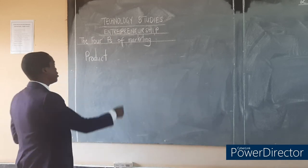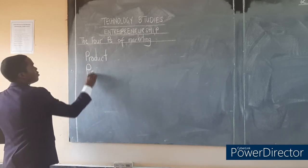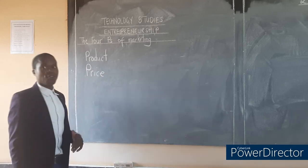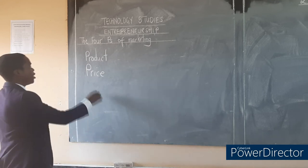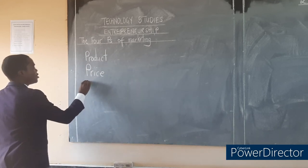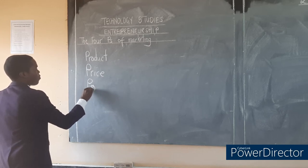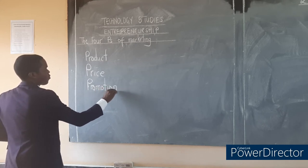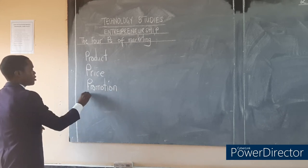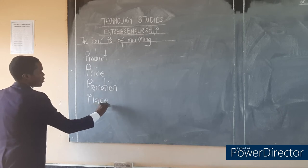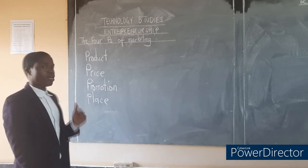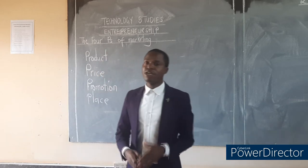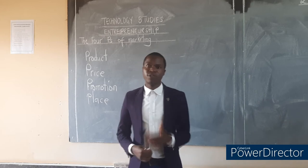The second factor is price. Then the third factor is promotion, and the last factor is place. So these are the four P's of marketing — the factors that you need to consider in business so that you keep your business running.